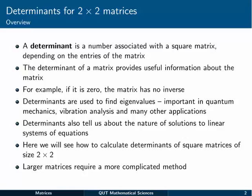For example, if a determinant of a matrix is zero, we can confidently say that that matrix has no inverse. In other words, we can't find a matrix such that A inverse is equal to the identity matrix.